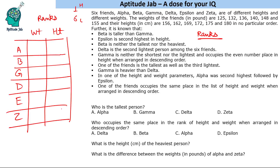The first relevant condition: Epsilon is the second highest in height, so Epsilon will have rank 2 in height. Delta is the second lightest person among the six friends. Second lightest means fifth position, because lightest is sixth and second lightest is fifth.